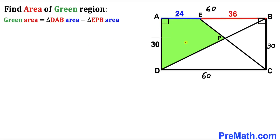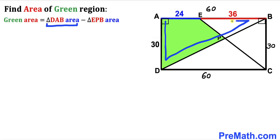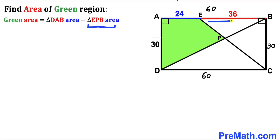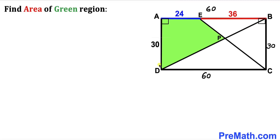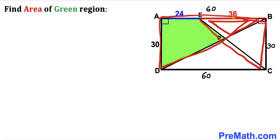Now let's make an observation: the area of the green shaded region is going to equal the area of the larger triangle DAB minus the area of triangle EPB. So our task is to calculate the area of triangle DAB and the area of triangle EPB.